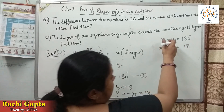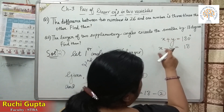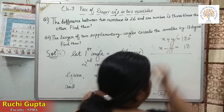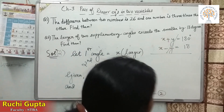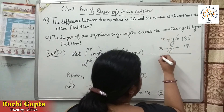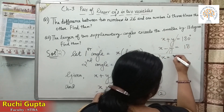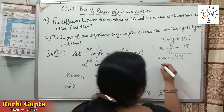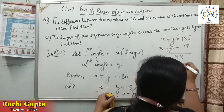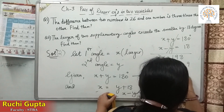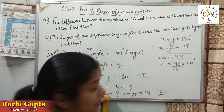Our two equations are X plus Y equals 180 and X minus Y equals 18. Notice that Y already has opposite signs in the two equations, so there is no need to subtract — variable Y cancels directly when we add. X plus X gives 2X, and 180 plus 18 is 198. So X equals 99 degrees.